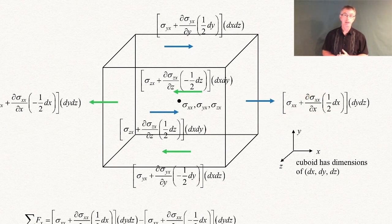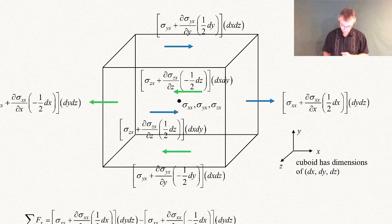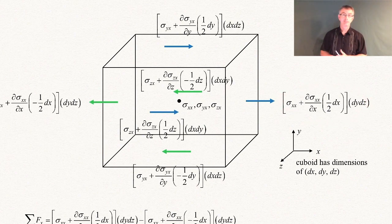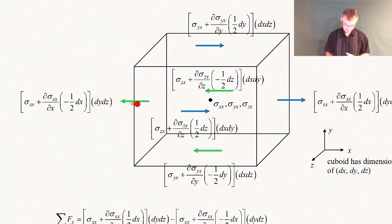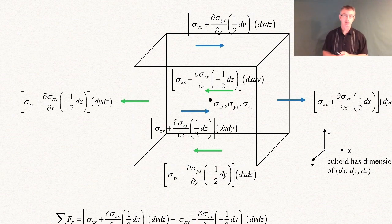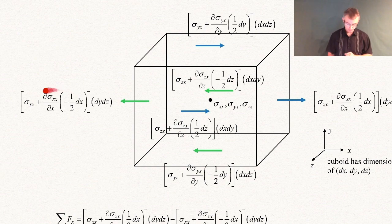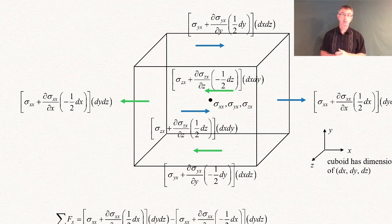That gives us the normal stress in the x-direction on the right face — the blue arrow. To make that a force, we multiply by the area dy·dz, which is the area of the right-hand face. On the left-hand face, the normal stress is sigma_xx plus (d sigma_xx / dx) times minus one-half dx, using the same Taylor series approximation. We multiply that by dy·dz to get the surface force on the left face.